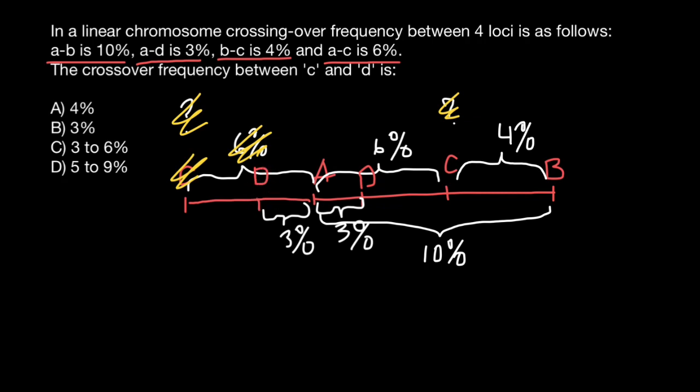Now let's read our question again. The crossover frequency between gene C and D is? So here is C, and if this is going to be the position of the gene D, if this distance between gene C and A equals 6%, if between A and D equals 3%, then frequency of the crossing-over between D and C is going to be 3%.